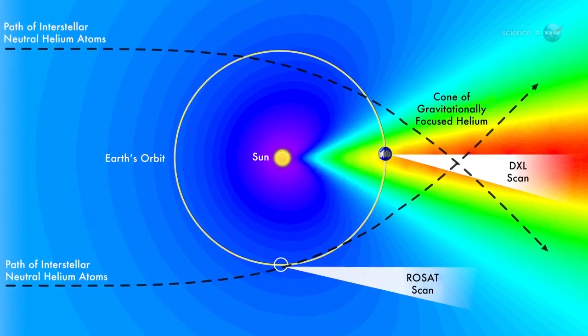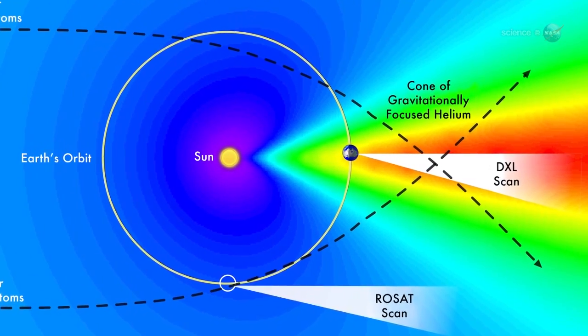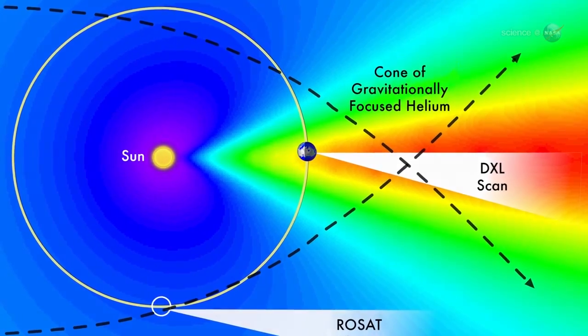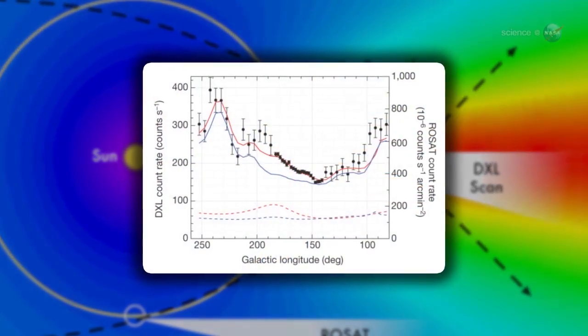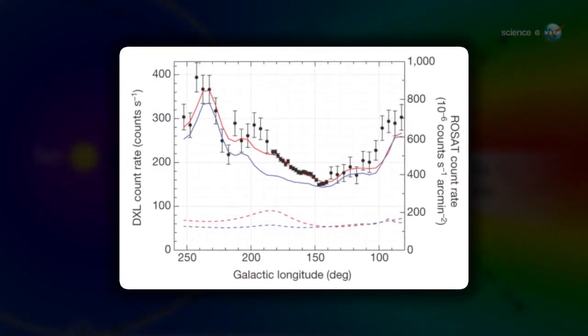The results, published online in the journal Nature on July 27, indicate that only about 40% of the soft X-ray background originates within the solar system. The rest must come from a local bubble of hot gas, the relic of ancient supernovas.